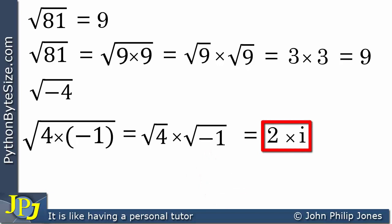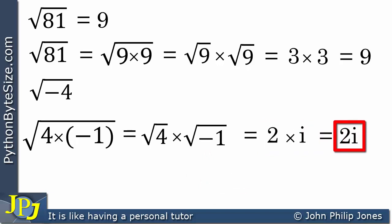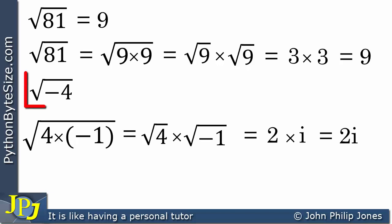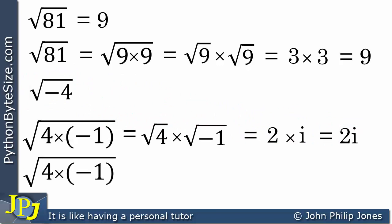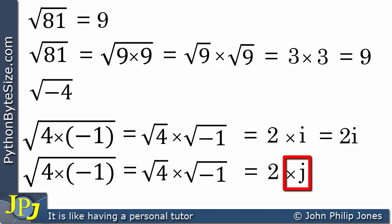We can further write this as 2i — in other words, we don't need the multiplication sign between the 2 and the i. This means we have two lots of the square root of minus 1, and 2i is how you would expect to see it written in mathematics. The square root of minus 4 is 2i. Now I'm going to use j instead, because I'm reflecting on how it will look in Python, and this will equal 2j. In Python, we use j — not i — to represent the imaginary component of a complex number.